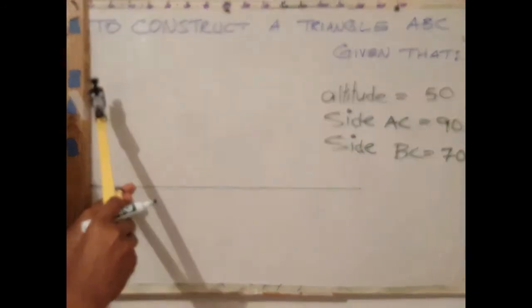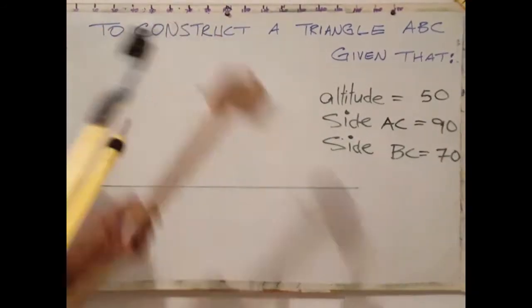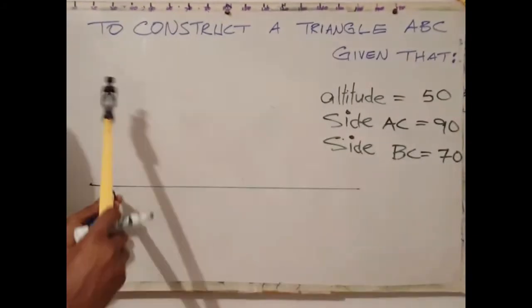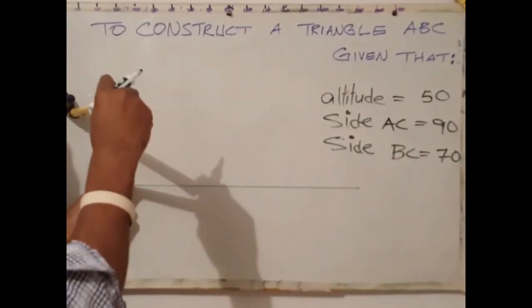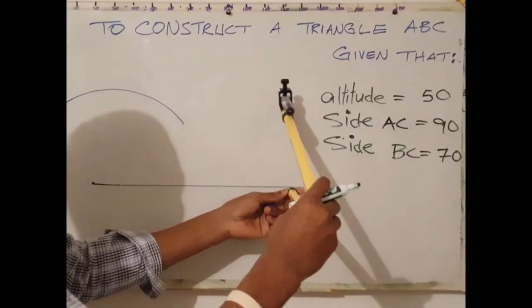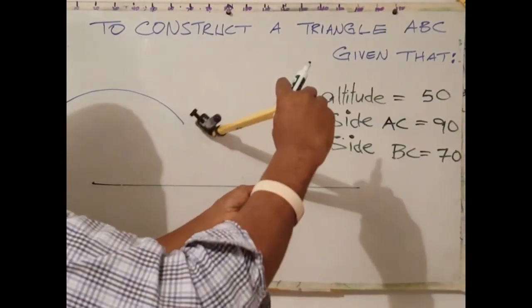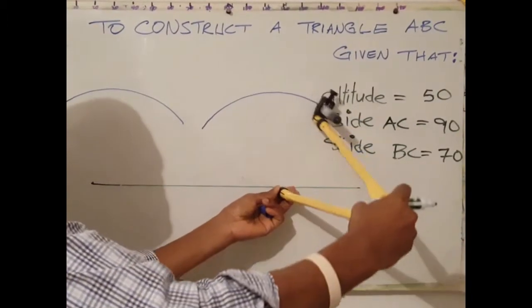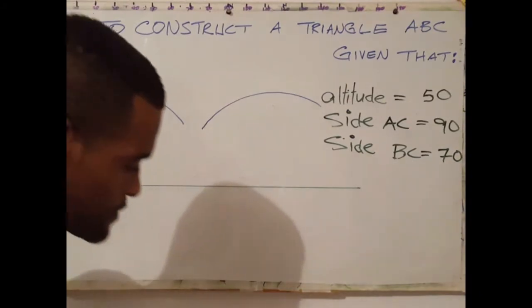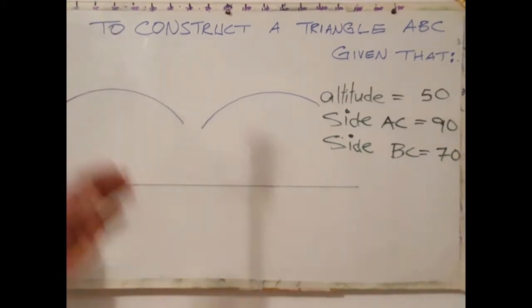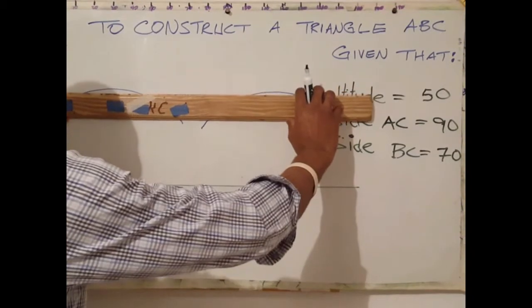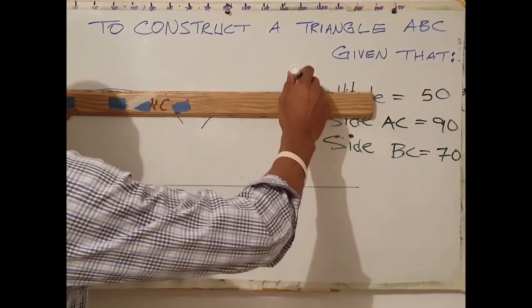At any two points on the given line, square two arcs — a first arc and a second arc. Then draw our parallel line at the tip of both arcs.